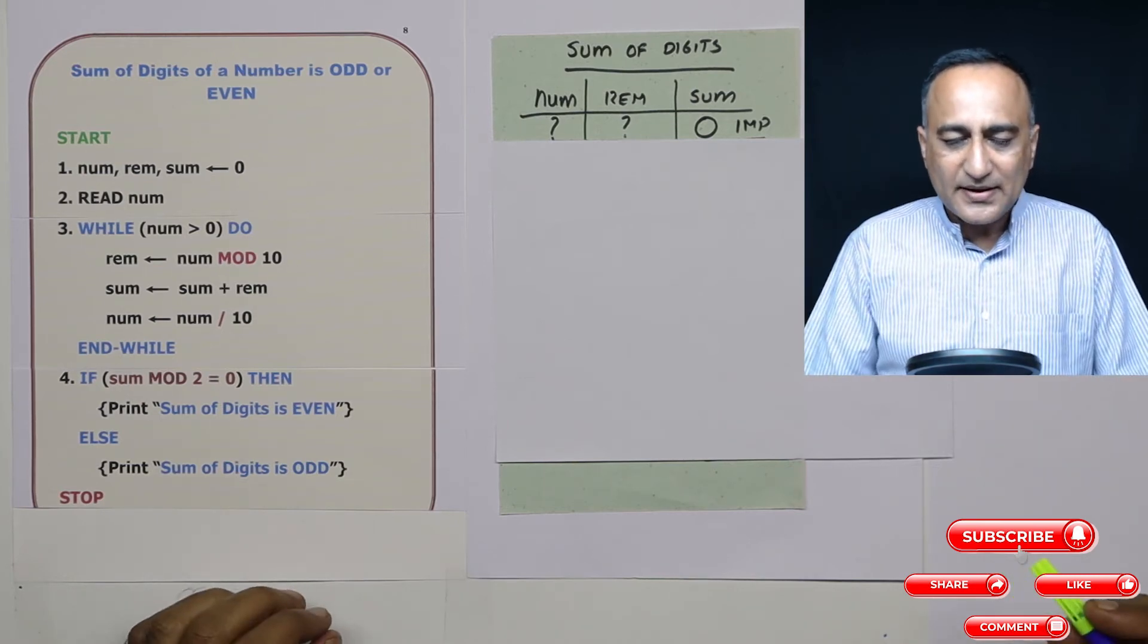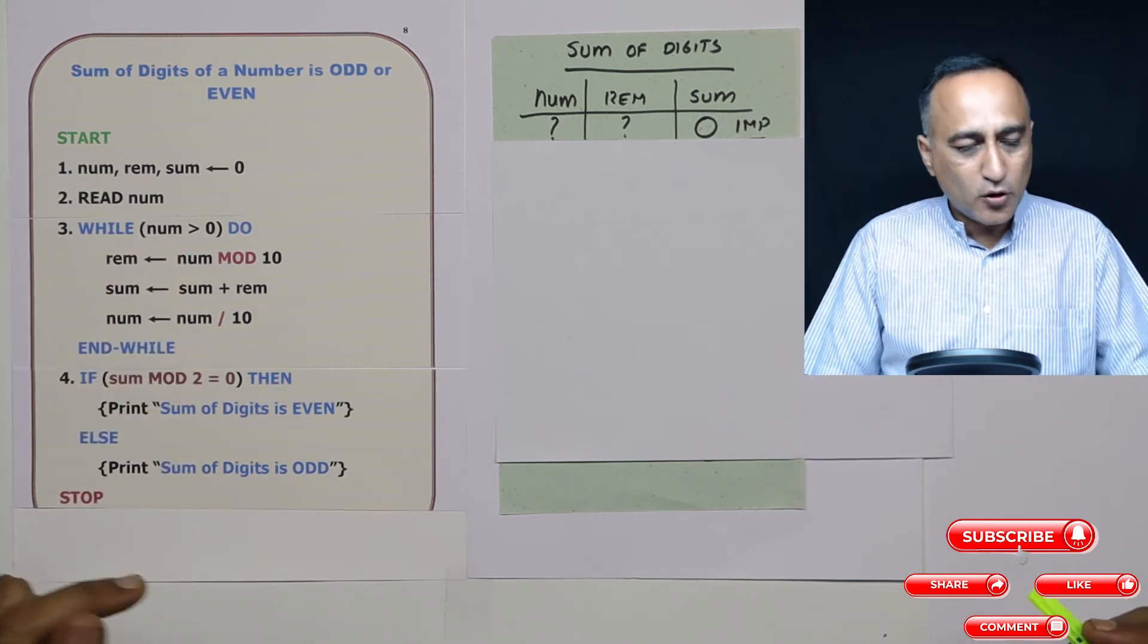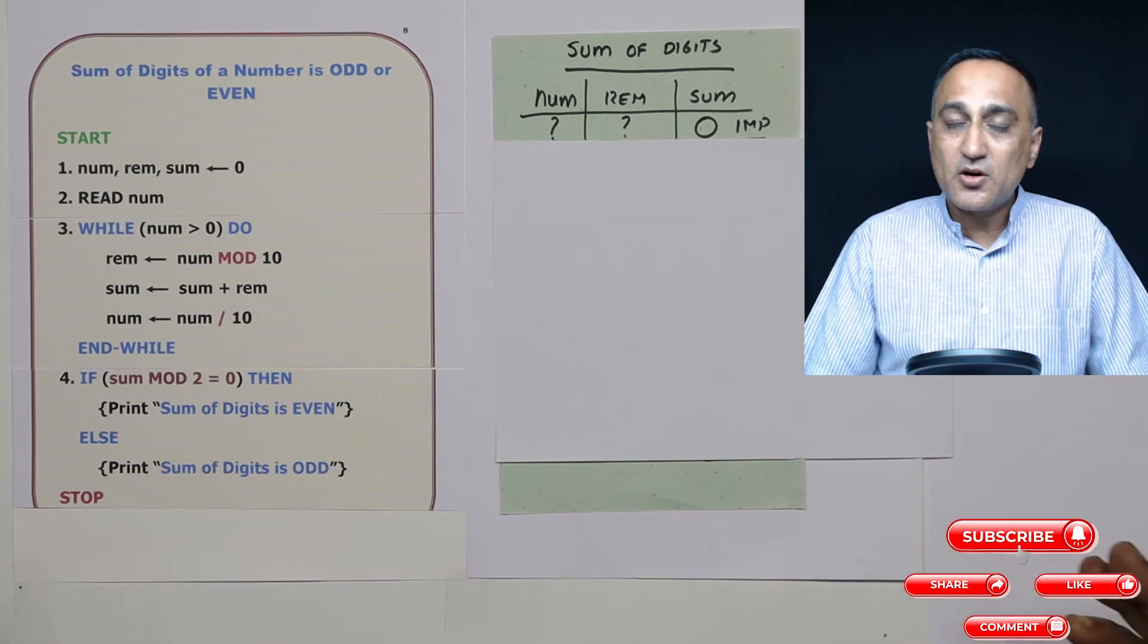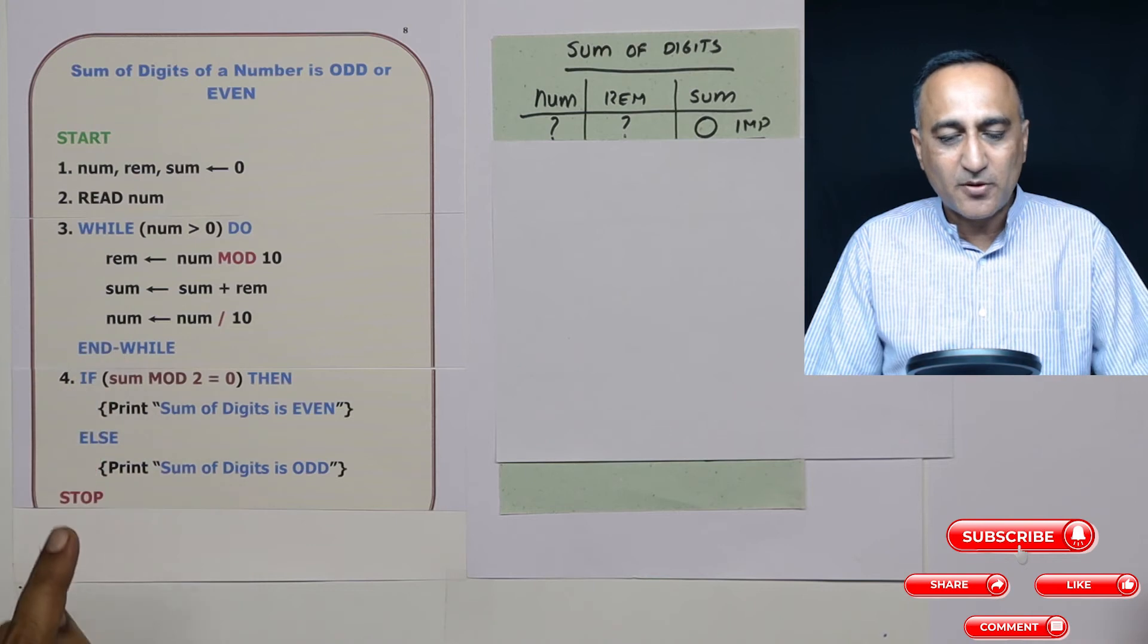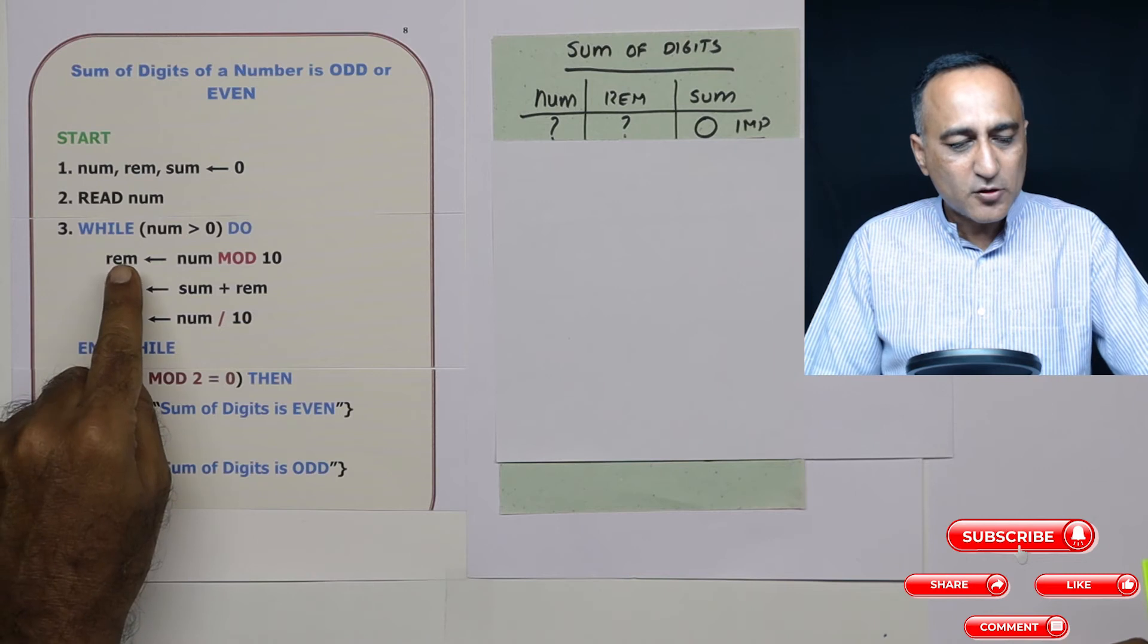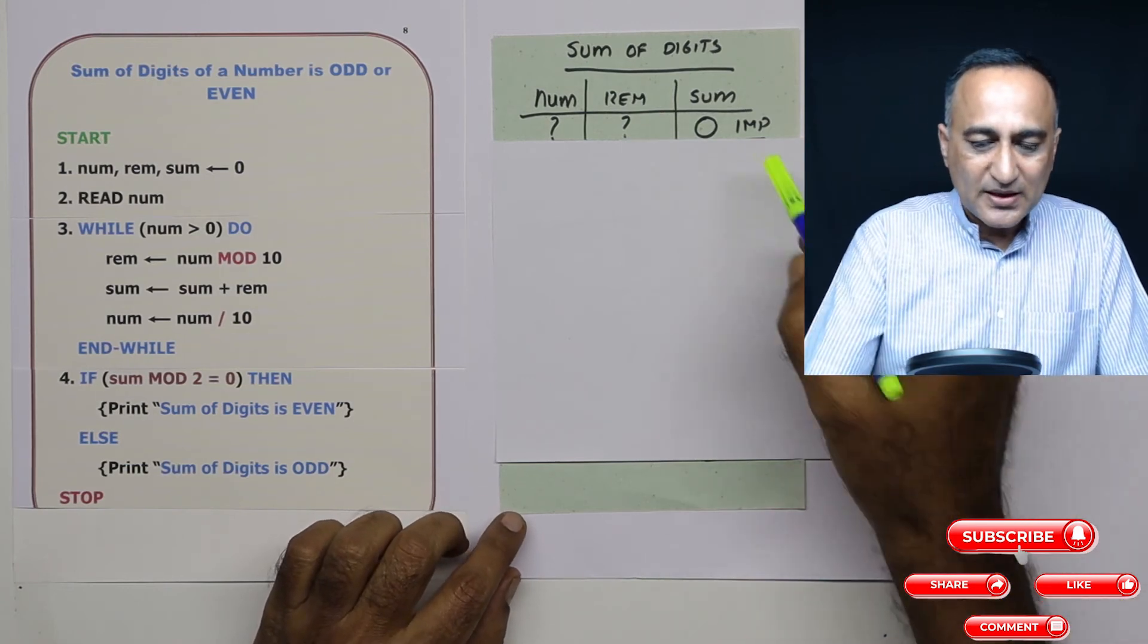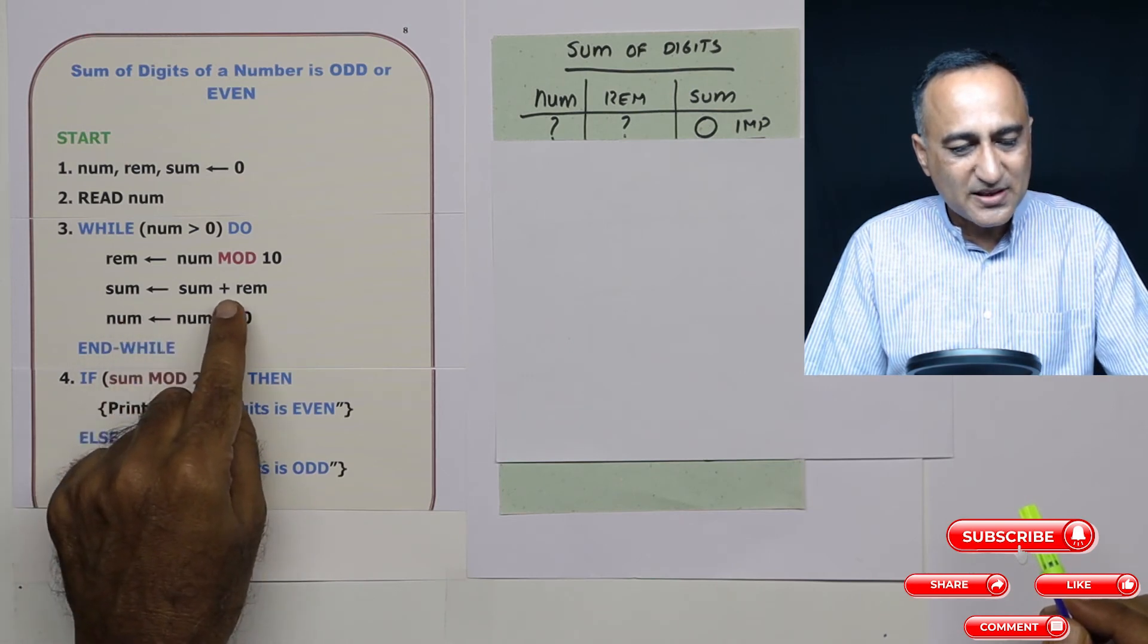Now we are going to take a look at test data to see that the logic is correct and understand the working of this particular algorithm. So initially number is a question mark because we are going to read the number from the user, so the old value will get overwritten. Remainder also is going to be calculated new every time. Sum I have to give it zero because I am saying sum is sum plus remainder.